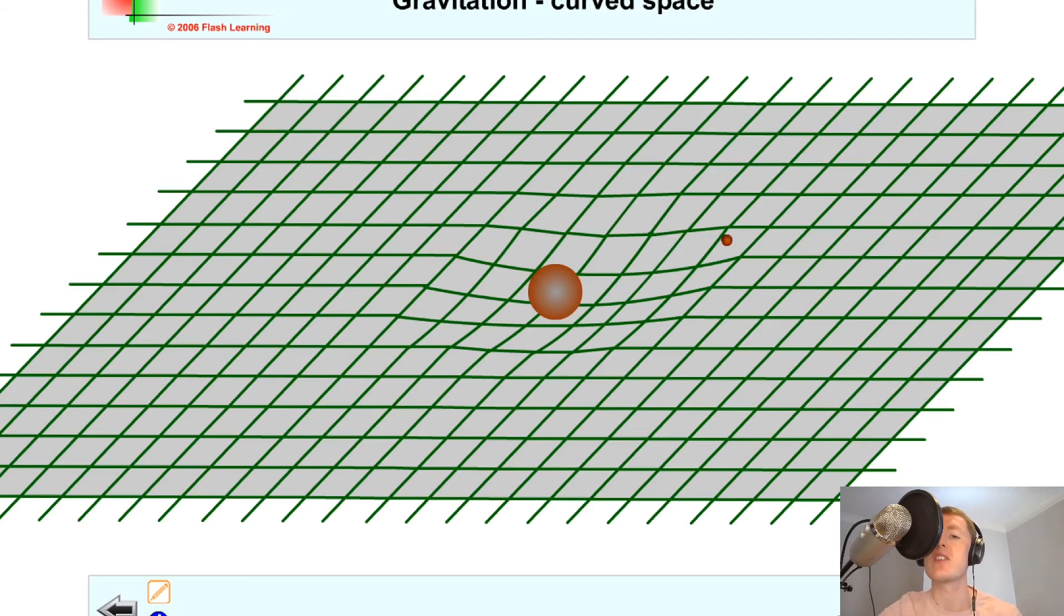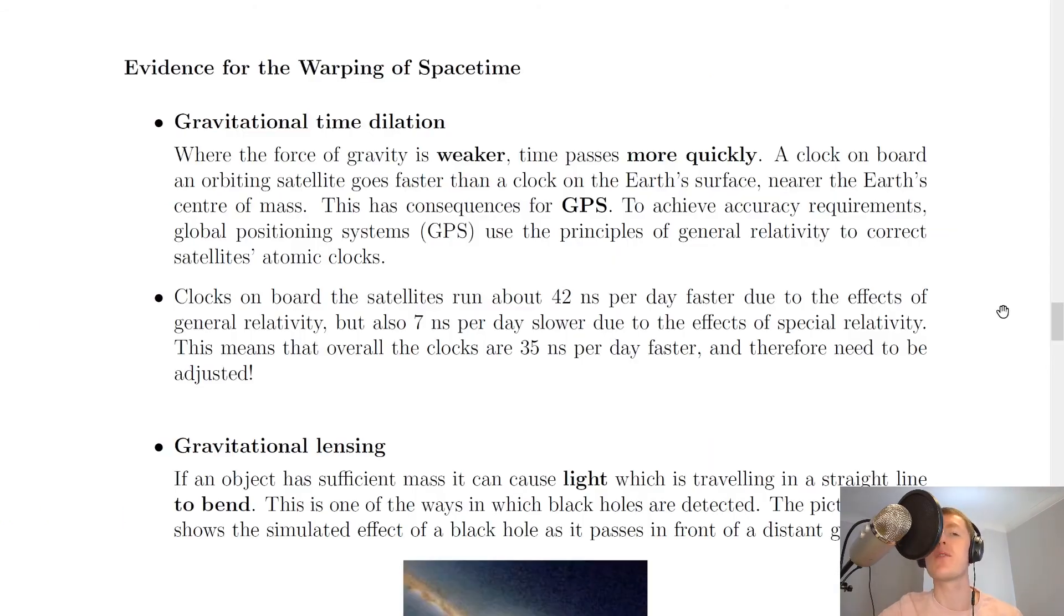So we can conclude from this that if our small masses are travelling slow enough, then they can be pulled in towards the gravitational well. So just to finish off this video, we're going to look at some evidence for the warping of space-time. So we're going to look at some proof of this warping actually occurring. So the first one is gravitational time dilation.